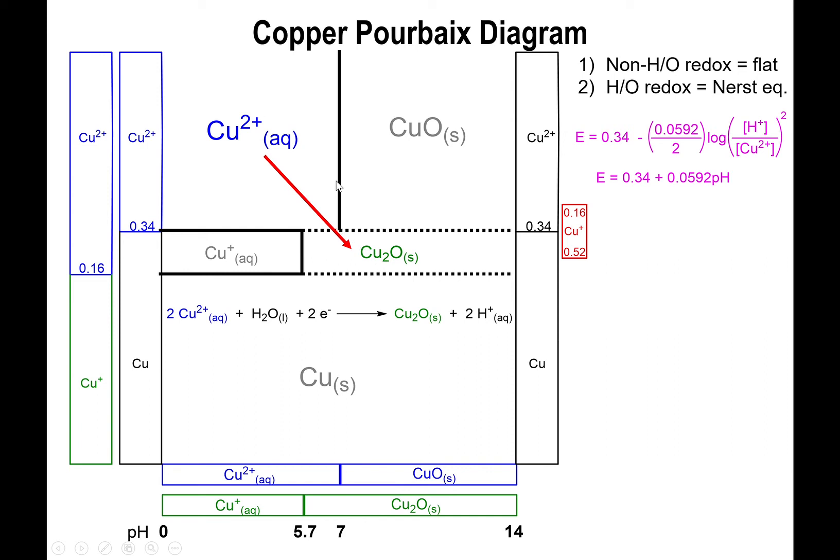If you bring this exponent outside of the log, you'll have 2 times log of H-plus, and the 2 in front of the log will cancel out the 2 in the denominator of the Nernst equation. So you'll end up with simply 0.0592 times the log of H-plus. If you bring in the negative that's at the front of all of this, you'll have negative log of H-plus times 0.0592. Therefore, you'll end up with positive 0.0592 times the pH.